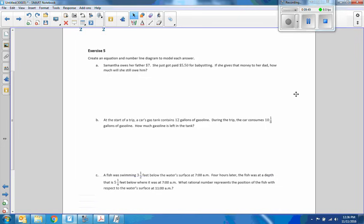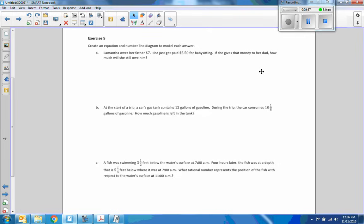Exercise five. Create an equation and number line diagram to model each answer. Samantha owes her father $7. She just got paid $5.50 for babysitting. If she gives that money to her dad, how much does she still owe? Here's the answer to A. She owes him seven. She gave him $5.50. That is starting at negative seven, moving to the right five and one-half. She still owes him $1.50.